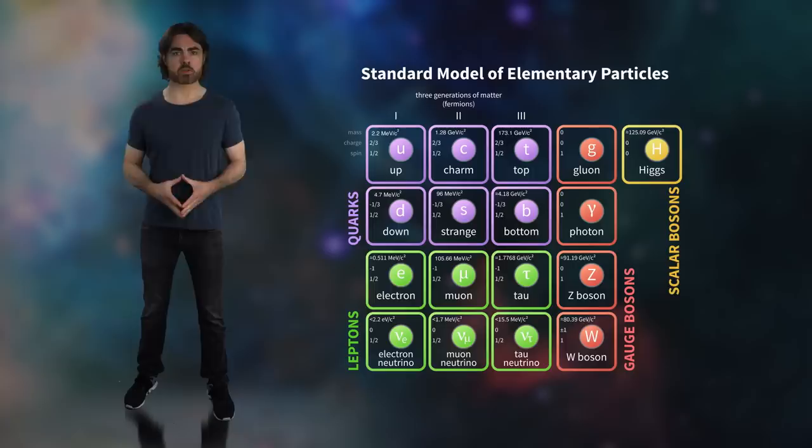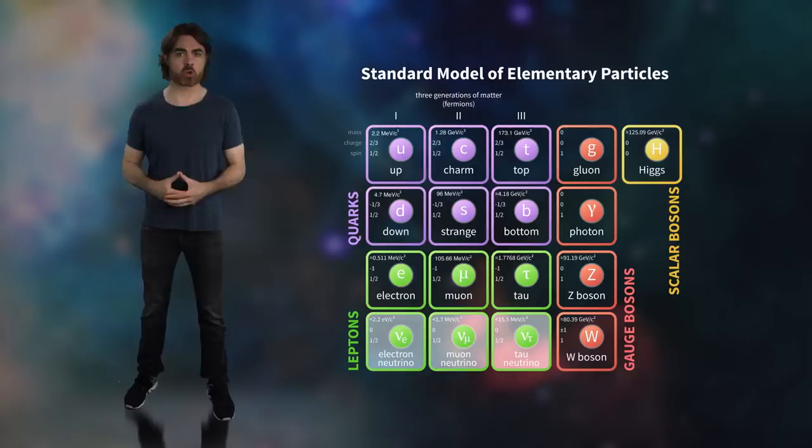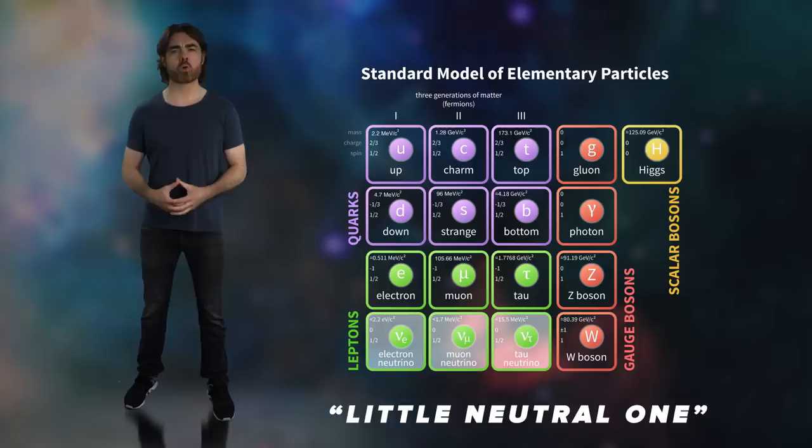And then there are the leptons, the ubiquitous electron and its heavier cousins, the muon and tauon, and again, each with its antimatter counterpart. Neutrinos are also leptons,